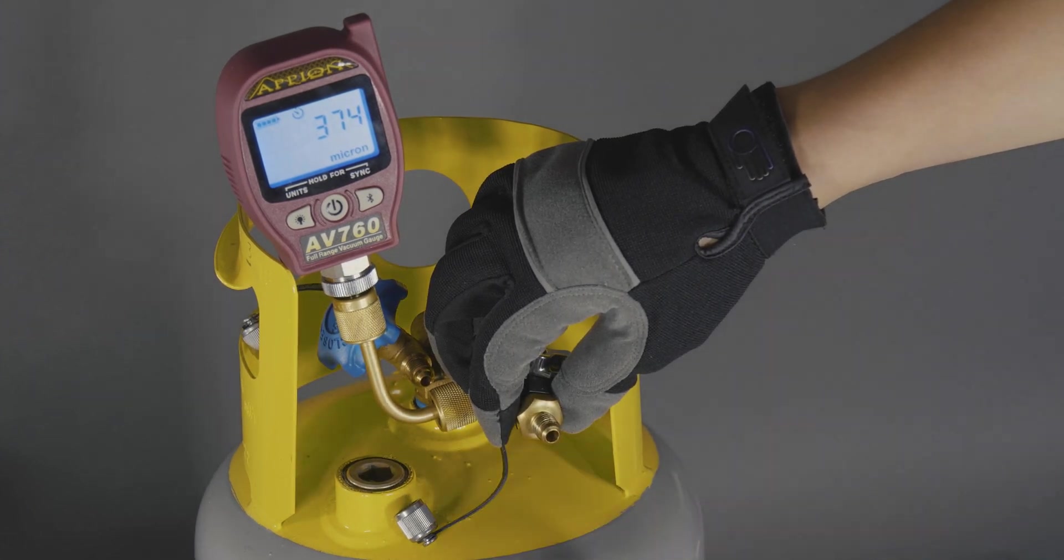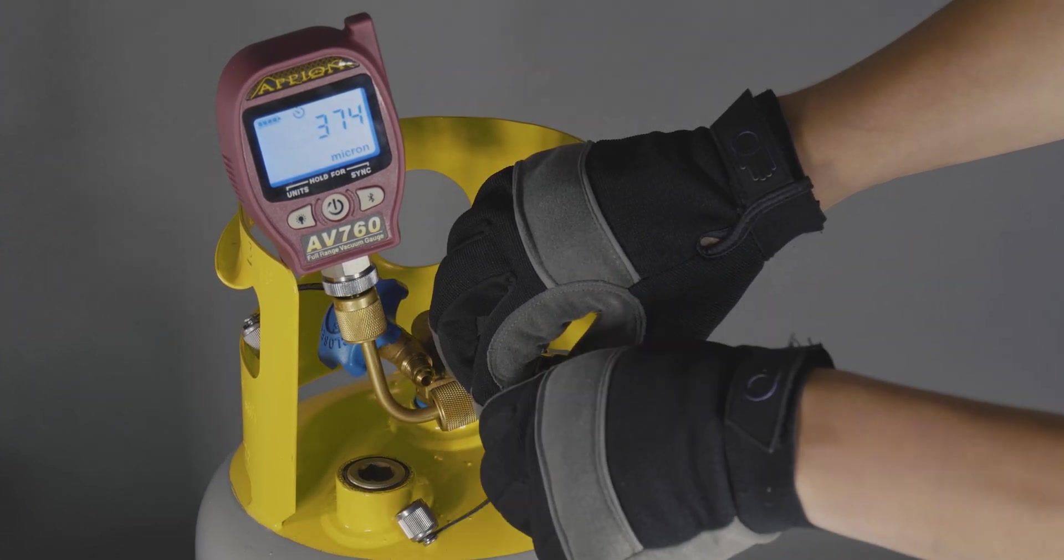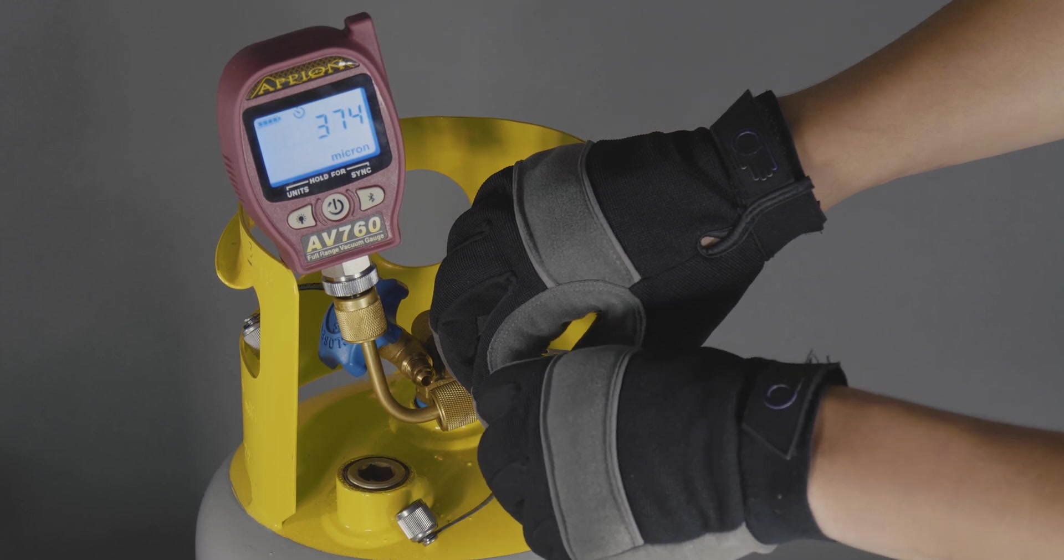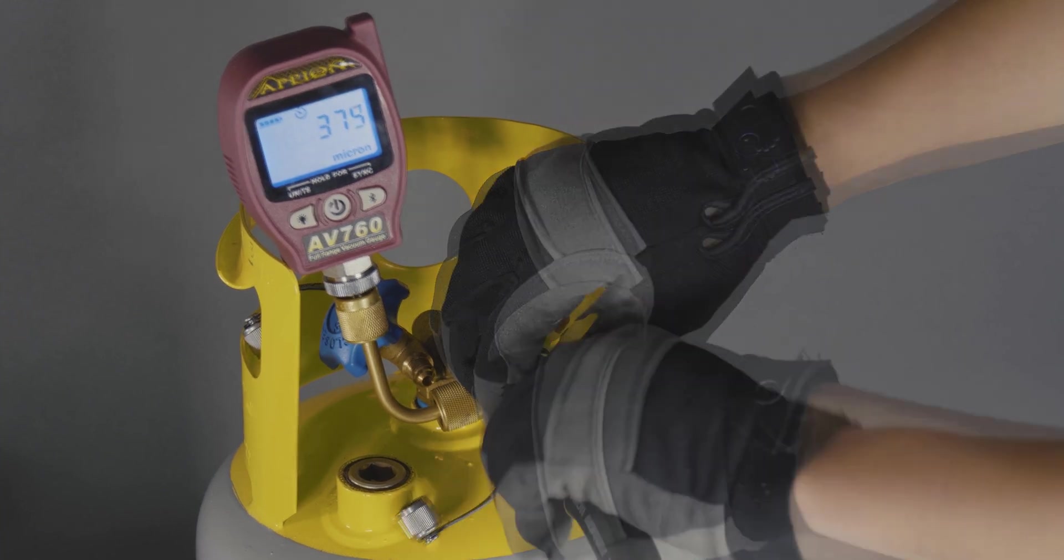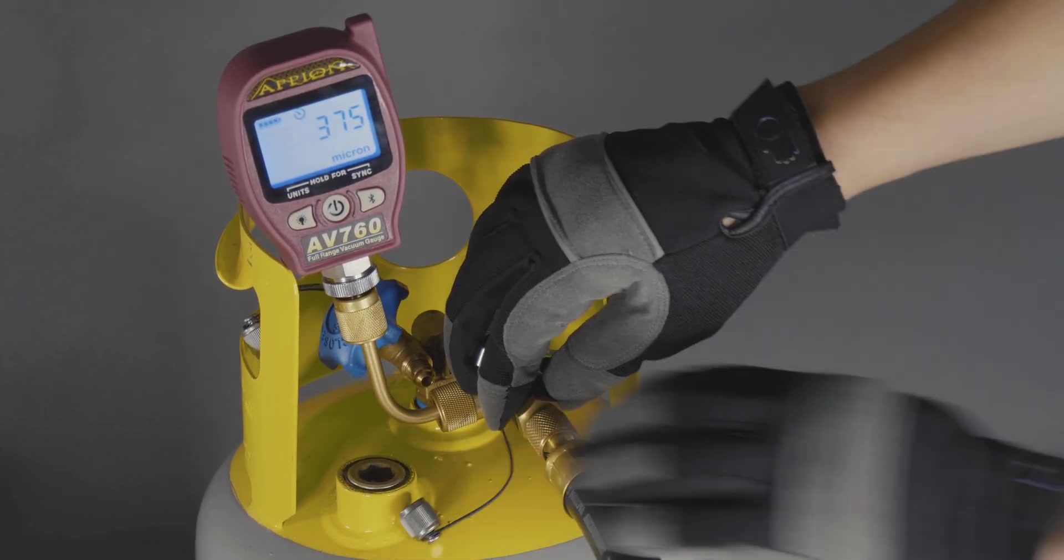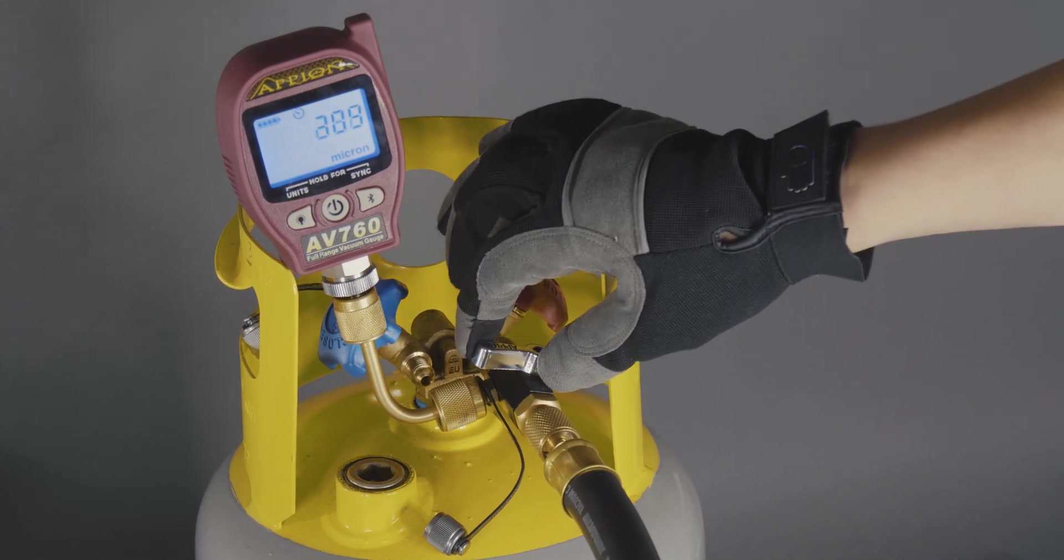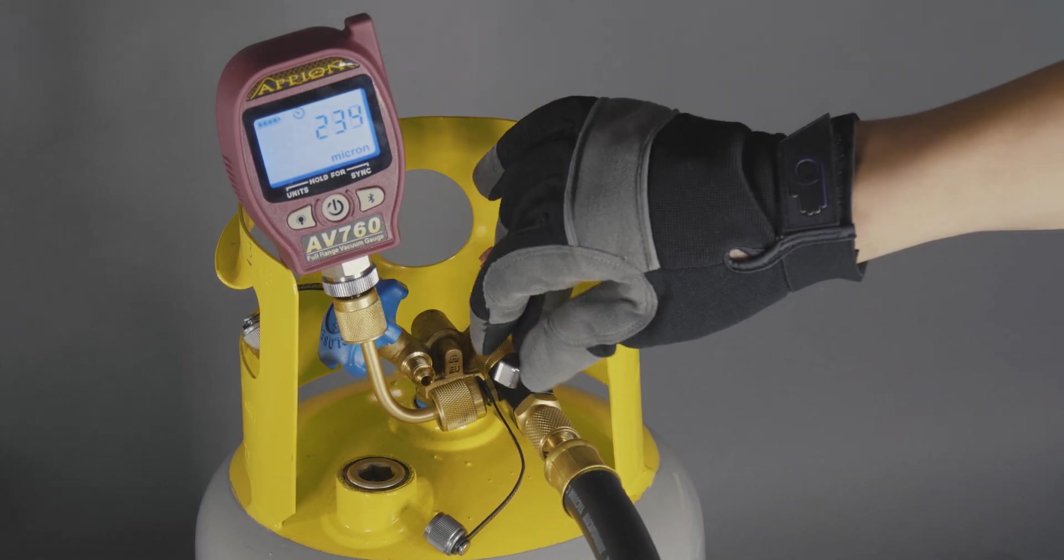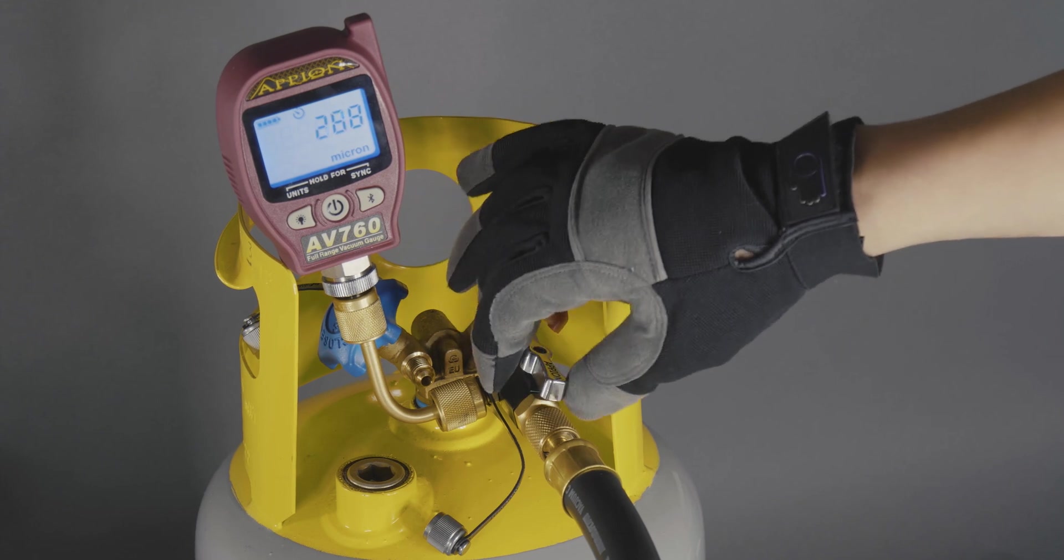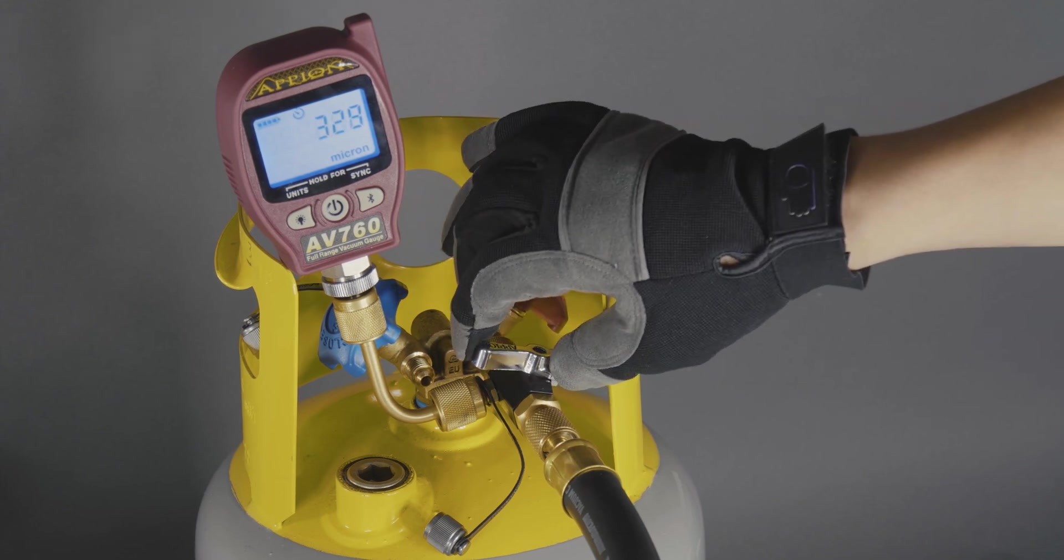Reattach the vacuum hose to the main through port on the test tool. Start the vacuum pump and open the valve. Pull the cylinder back down below 200 microns, being sure to open and close the valve to release the residual air molecules.